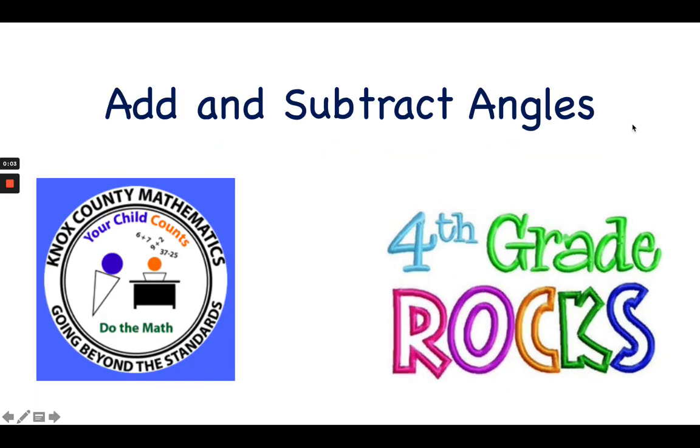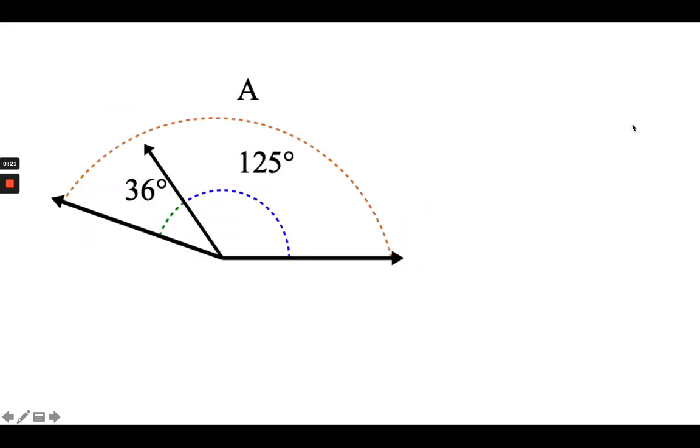Today, for our math strategies video, we're going to be talking about adding and subtracting angles. We're going to be working with decomposing angles into smaller angles, composing angles to form larger angles. We're going to be finding that unknown angle measure by adding and subtracting angles of known measures. So let's go ahead and take a look at some problems.